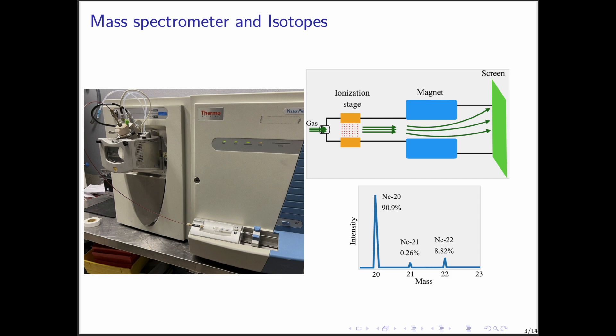Ions that have the same charge but different masses travel in paths with different radii. For example, if we analyze a pure sample of neon gas, we observe a mass spectrum with three distinct peaks. Each peak corresponds to a different neon isotope. This proves that neon naturally exists in three isotopic forms.